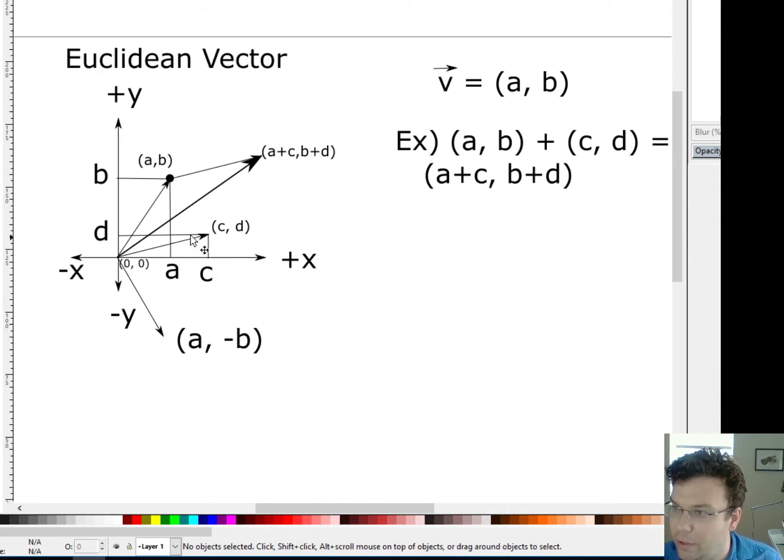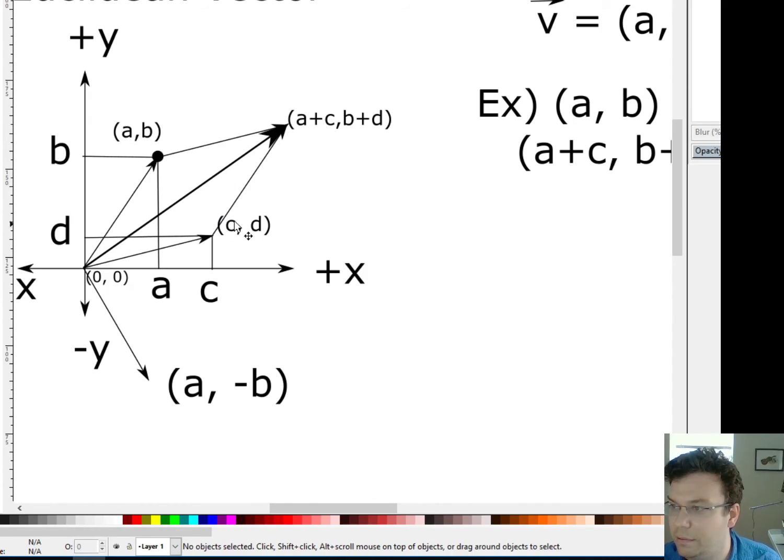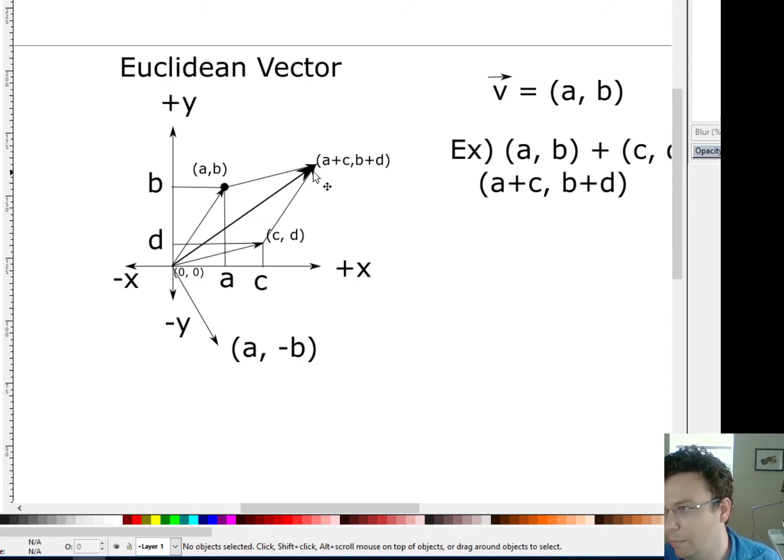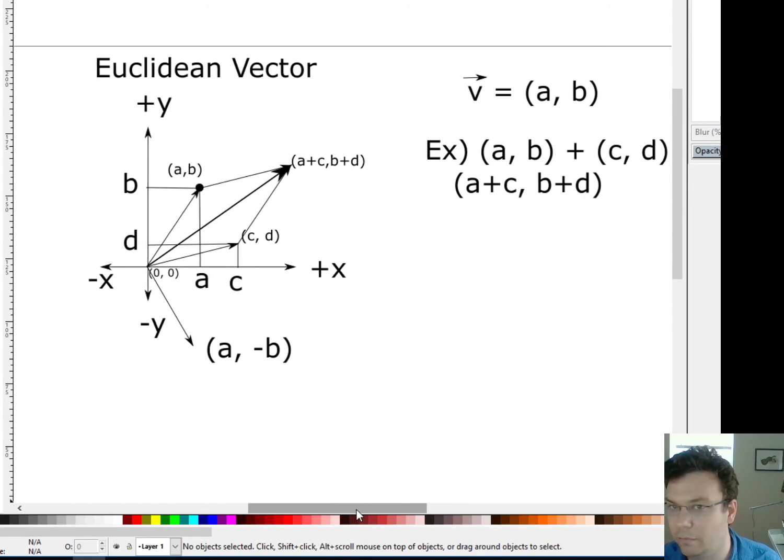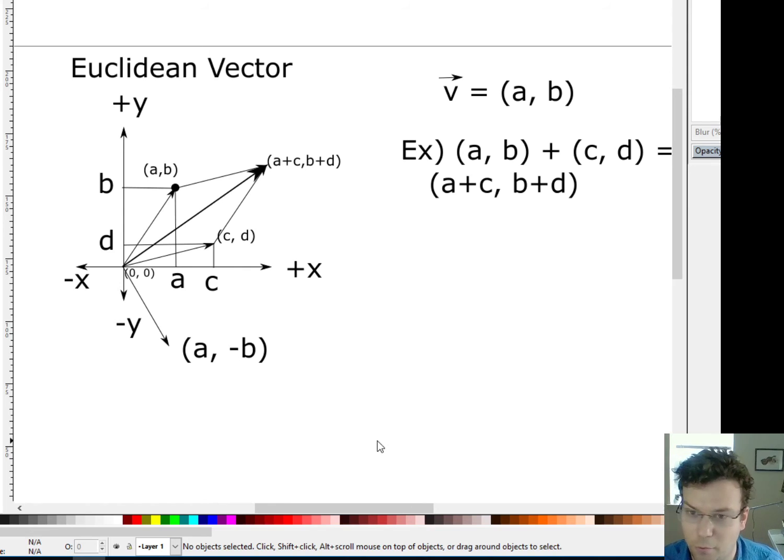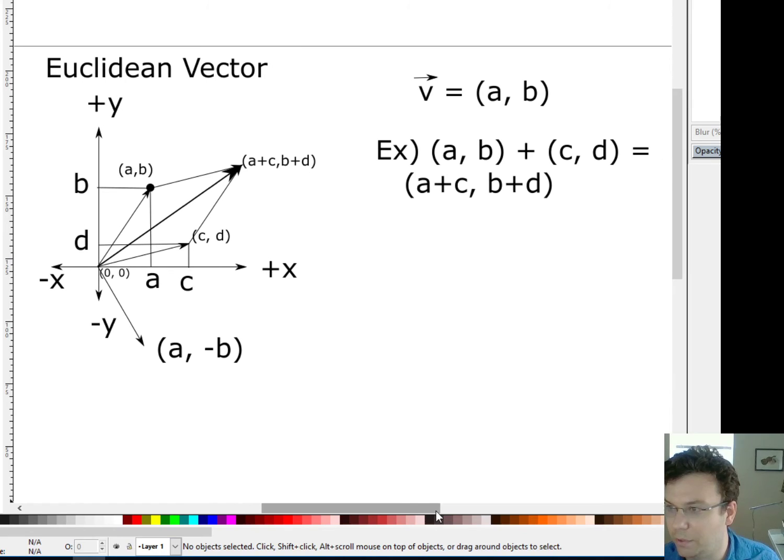Now, the other thing you notice, I mean, I could have done the same thing by taking the vector (a, b), making a copy, sliding it over, and then putting the tail of (a, b) at the tip of (c, d). And that would end me up at the same place. And the reason is because addition is commutative. So it doesn't matter if I add one plus three or three plus one. So it doesn't matter what order I put the vectors in.